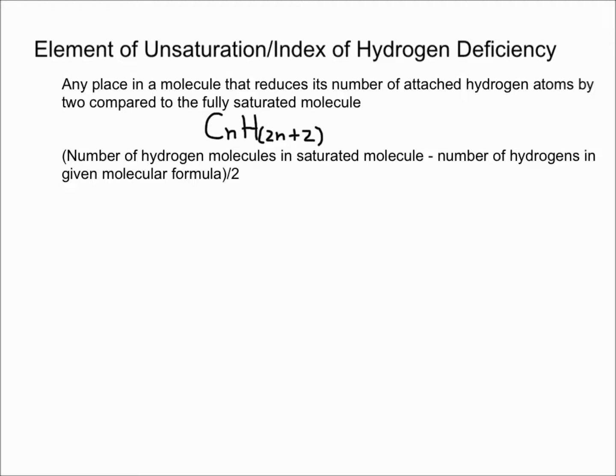An element of unsaturation is any place in a molecule that will reduce its number of attached hydrogen atoms by two. This is when compared to the fully saturated molecule, which molecularly written would have that formula.